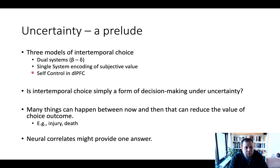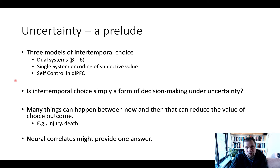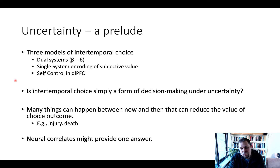Finally, we have a self-control account, which focused primarily on the dorsolateral prefrontal cortex and its role in possibly inhibiting the propensity to go for immediate rewards.